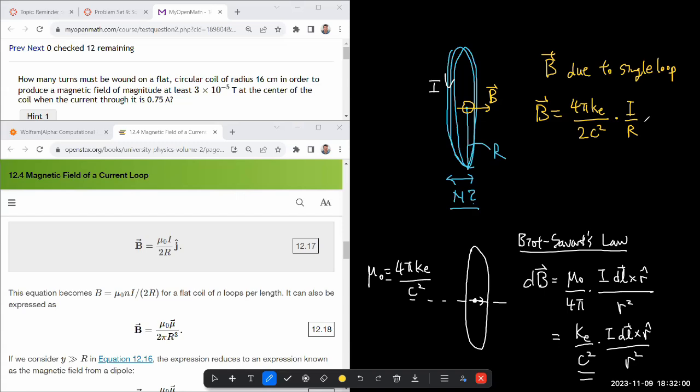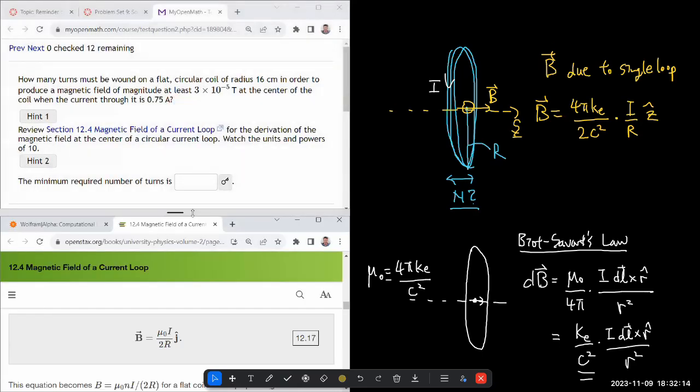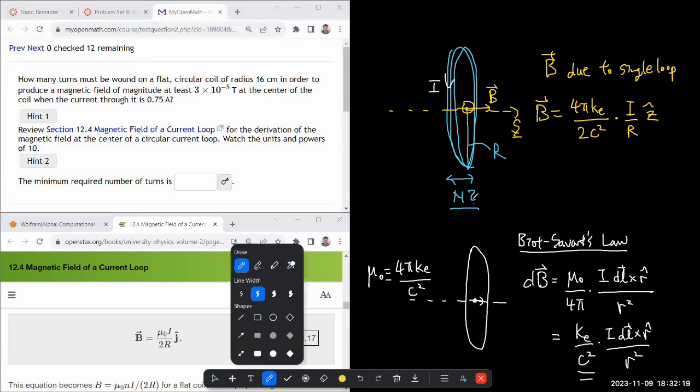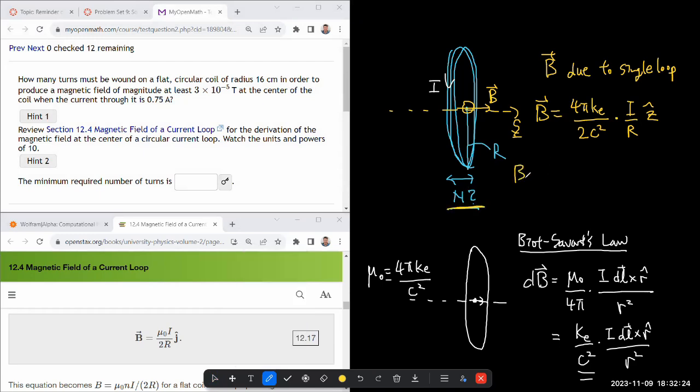We'll say that's ŷ. We'll just define this to be the y axis. Doesn't matter. The question isn't asking for direction anyway. So given that this is the magnetic field due to a single loop, then the expression for the magnetic field due to n number of loops should be B_total. Just writing the magnitude should be n times that. And you are given this total. So you just solve for it.